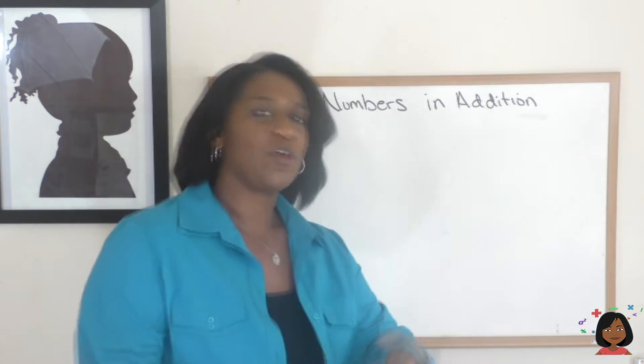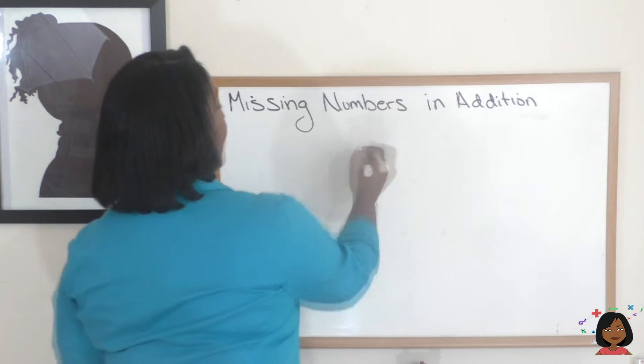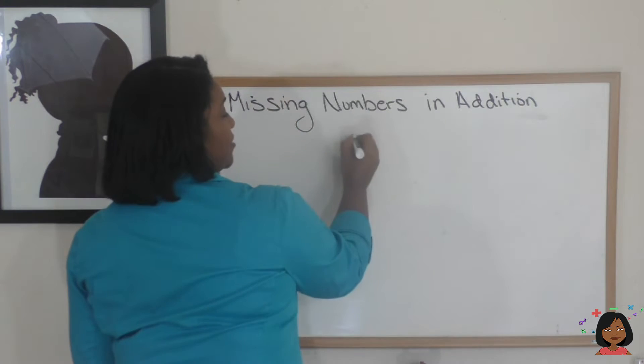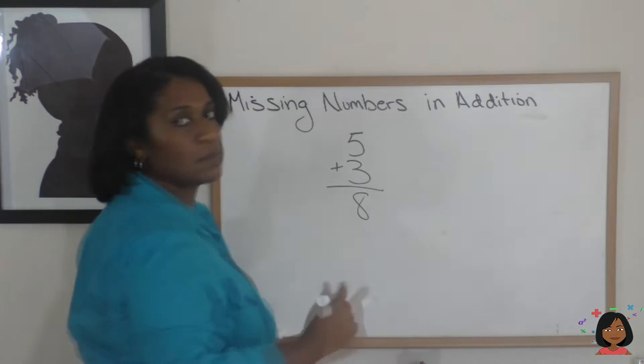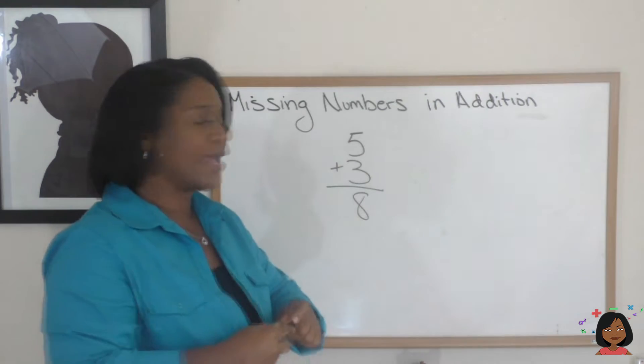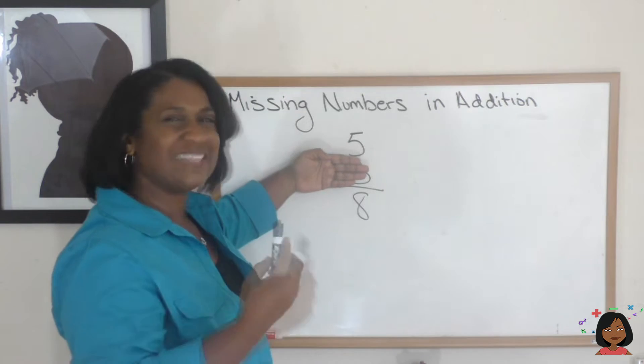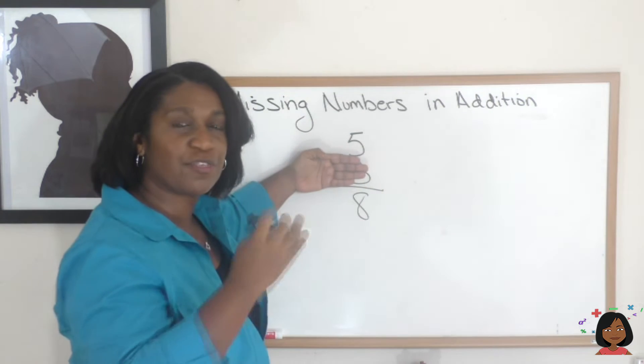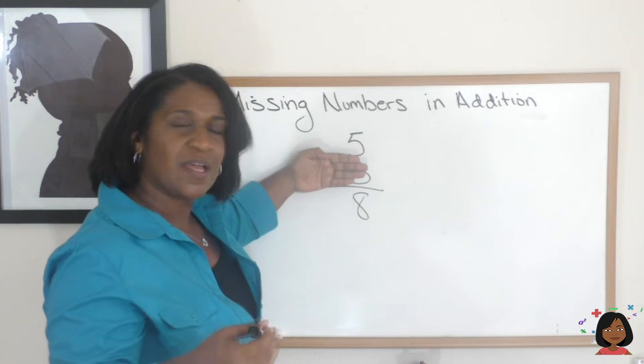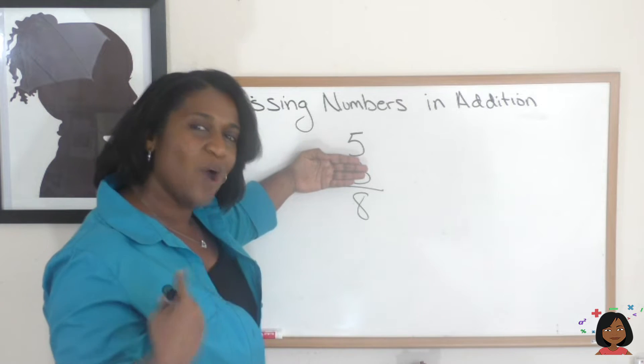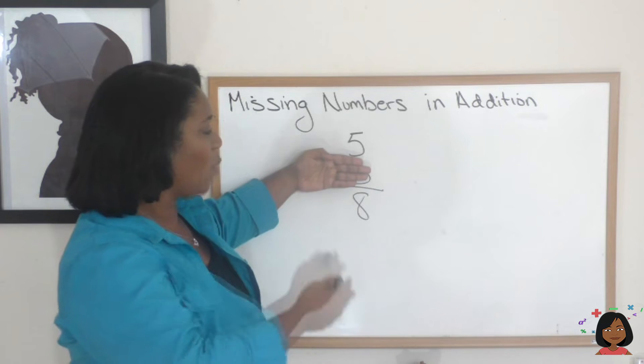What do I mean by that? Well, let's say I had an addition fact. 5 plus 3 equals 8. Now, let's say I covered up the 3. I didn't know that it was 5 plus 3 that equals 8. Tell me, how could I possibly figure that out, this 3?